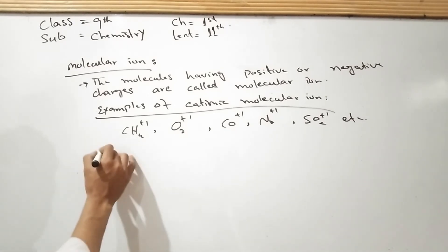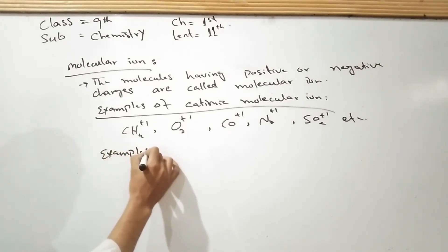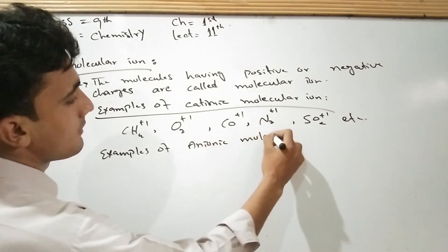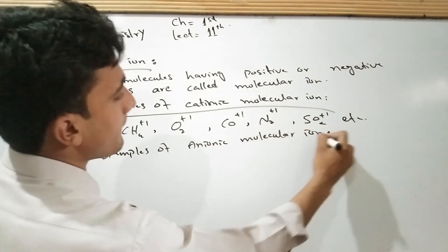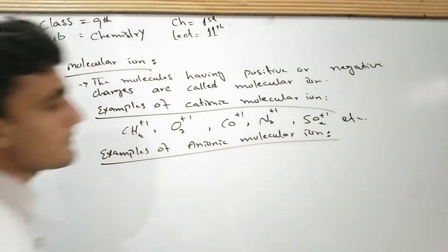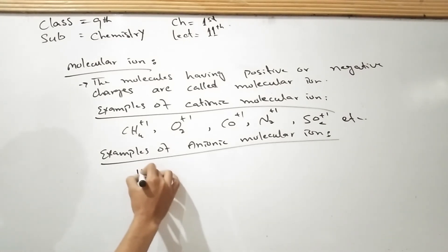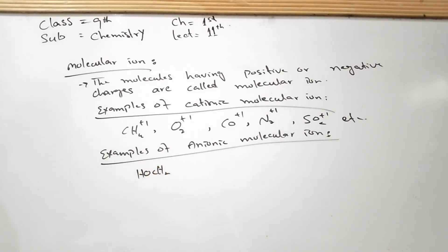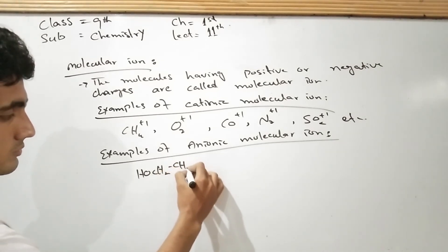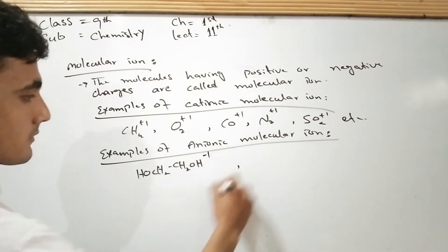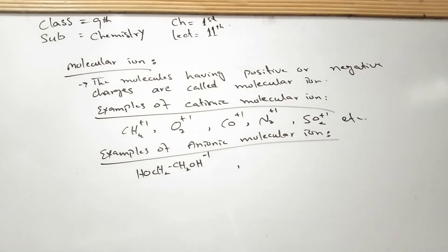Examples of anionic molecular ions include HOCH2CH2OH (methylene glycol) with a minus 1 charge, and C2H5OH with a minus 1 charge. These are examples of anionic molecular ions.